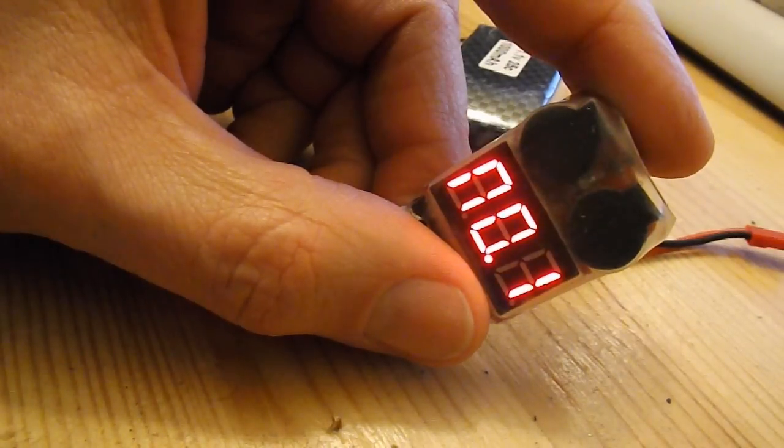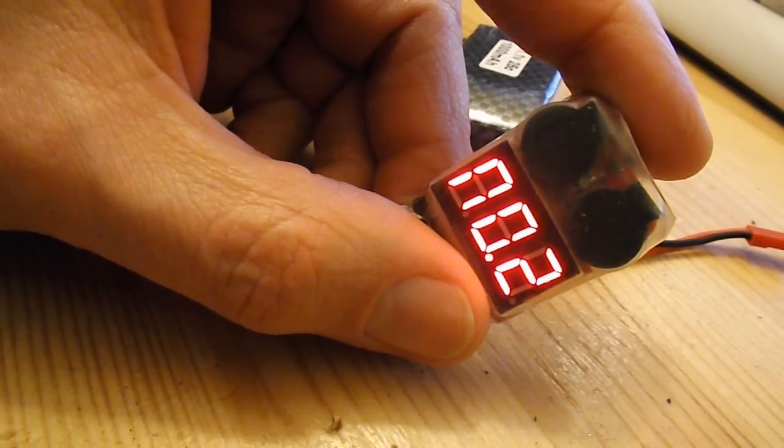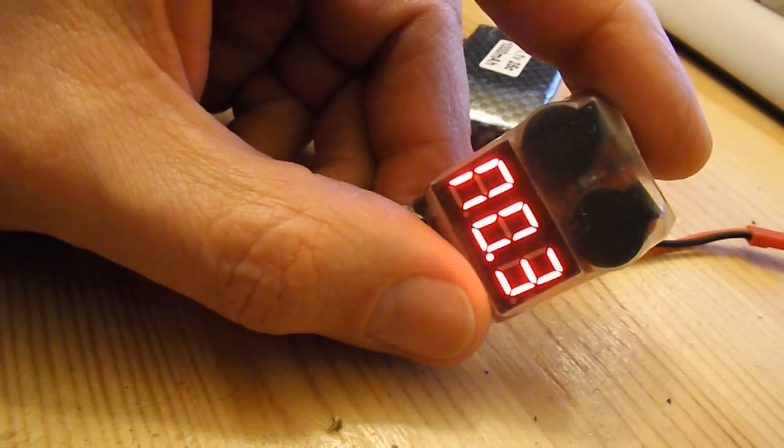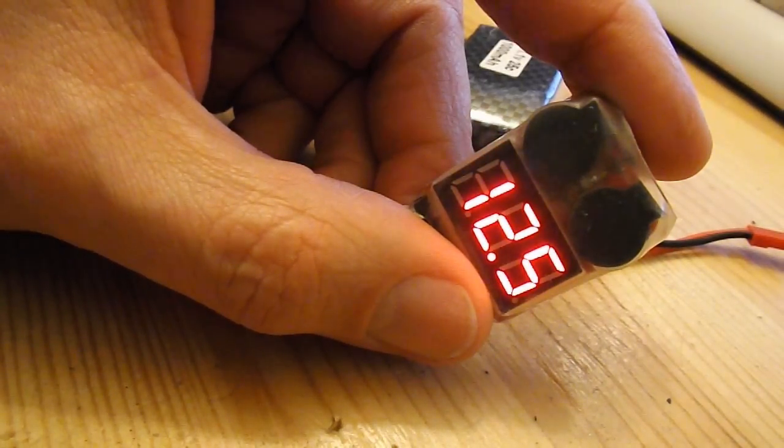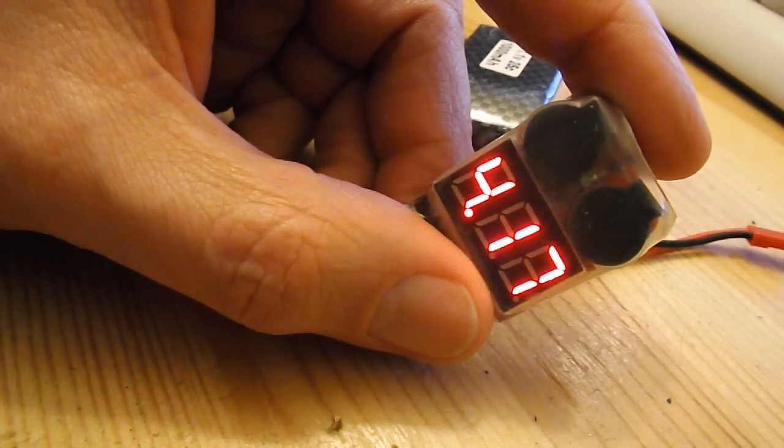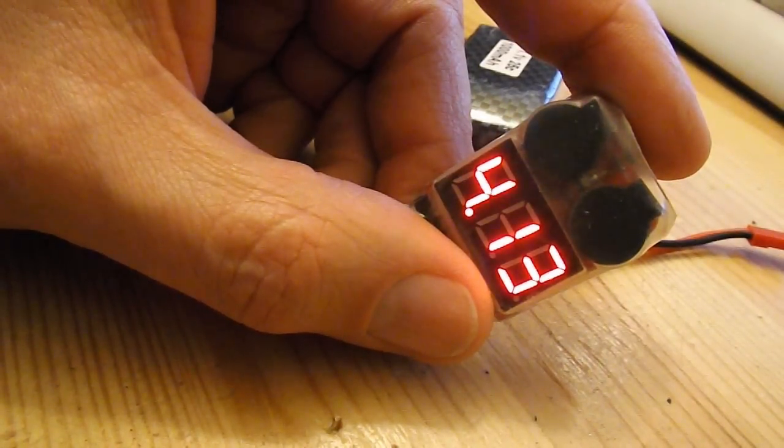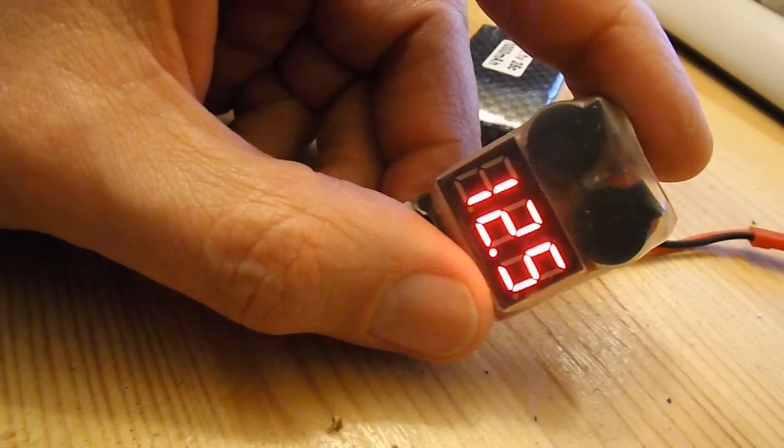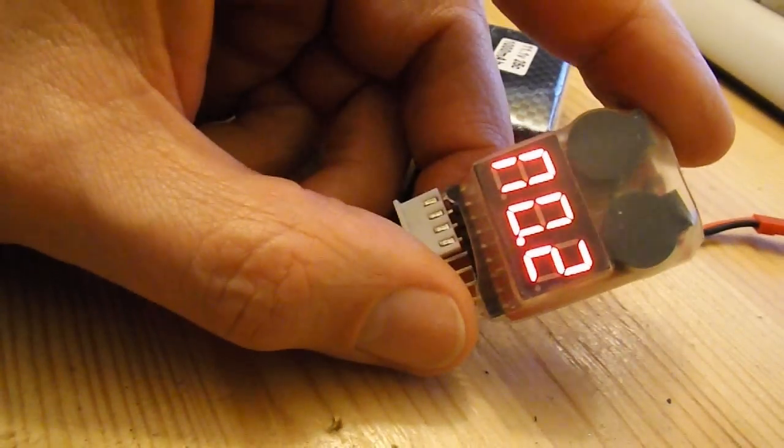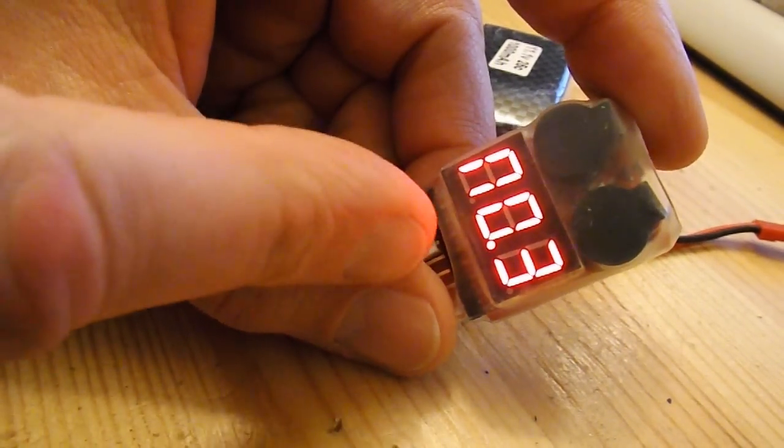So there you go, that tells me my 3-cell LiPo is fully charged. 12.5 total, number 1, 4.17, number 2, 4.16, number 3, 4.13. So they're not perfectly balanced, but that's how it should work.